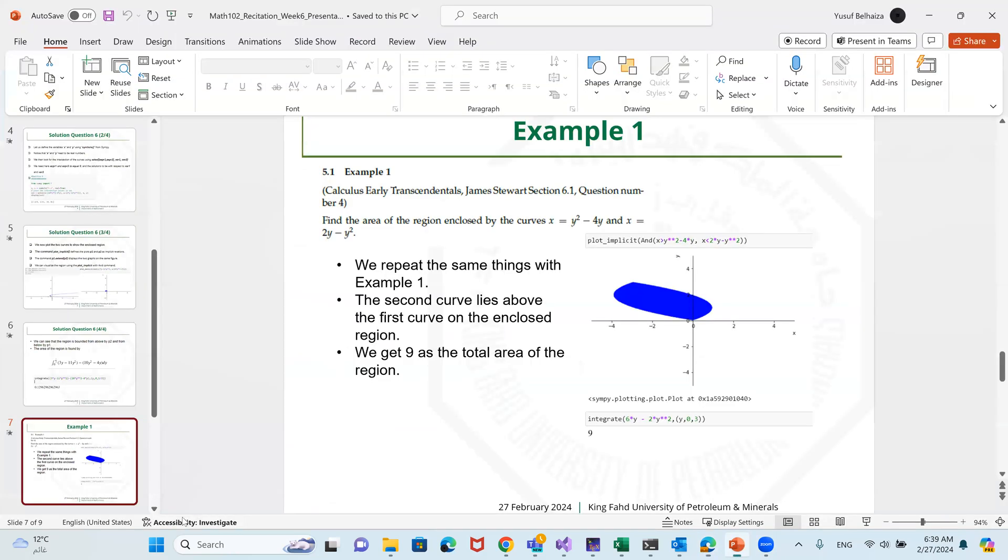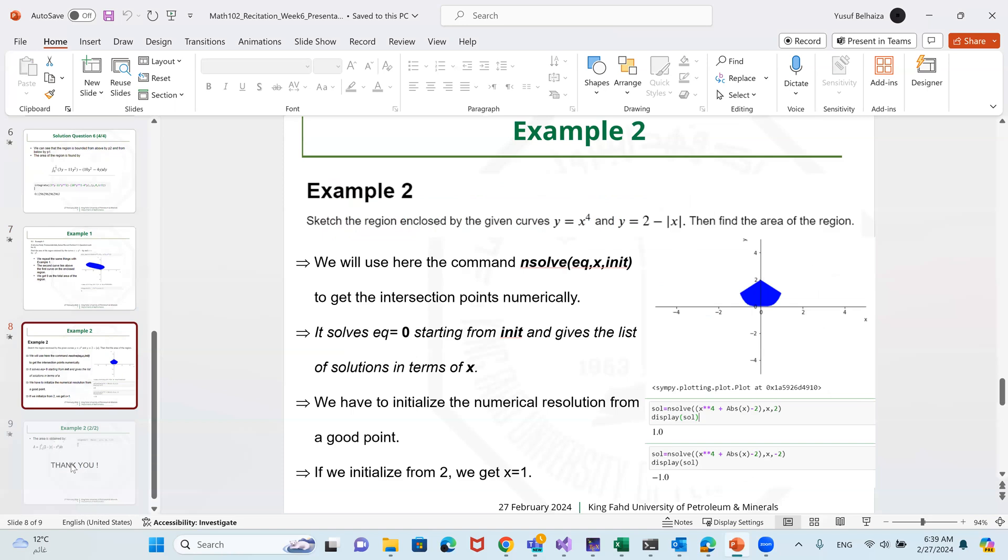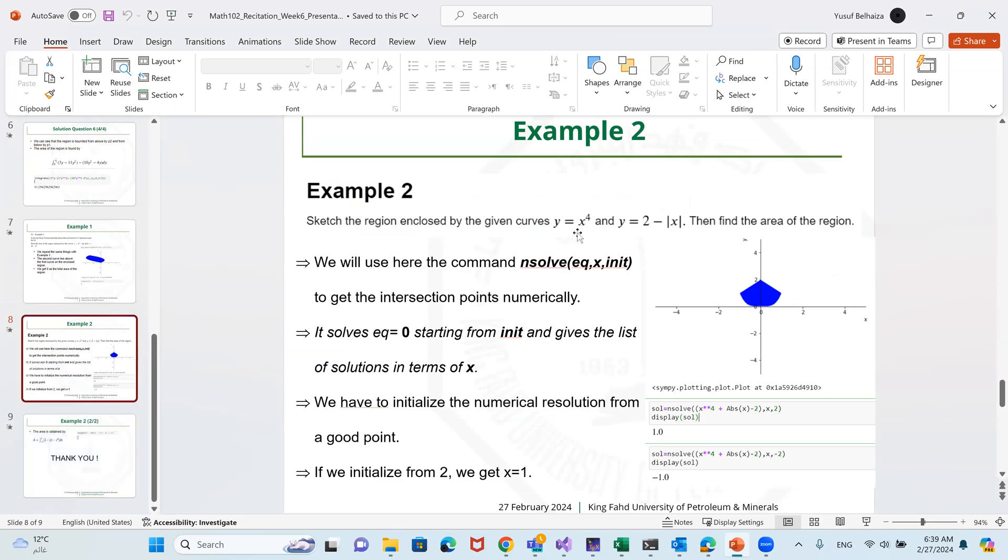Now example number 2. We kind of have different shapes here. We have y equals x to the power 4 and y equals 2 minus absolute value of x. And we need to find the area of the region between the two curves. We use the command here, nsolve, to get the intersection points. It might be a little bit hard to get an analytic solution for this because of the x to the power 4. And this command solves the equation equals 0, starting from initial point, and gives the list of solutions in terms of x. And here we have to initialize the numerical solution from a good point. If you remember, we did something very close to this in Math 101 with the Newton method.